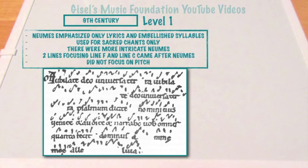During the 9th century there were neumes, which was the first time they started marking music — but it didn't focus on pitch, only on words and lyrics. They would have little markings that would only tell a singer where syllables would be ornamented or embellished, and it only focused on sacred chants.